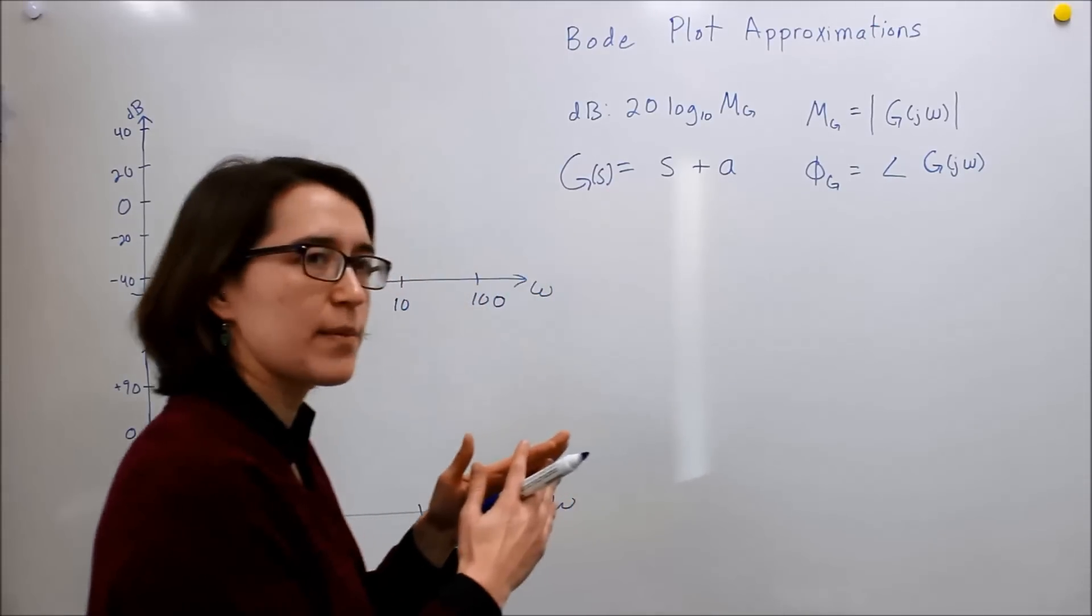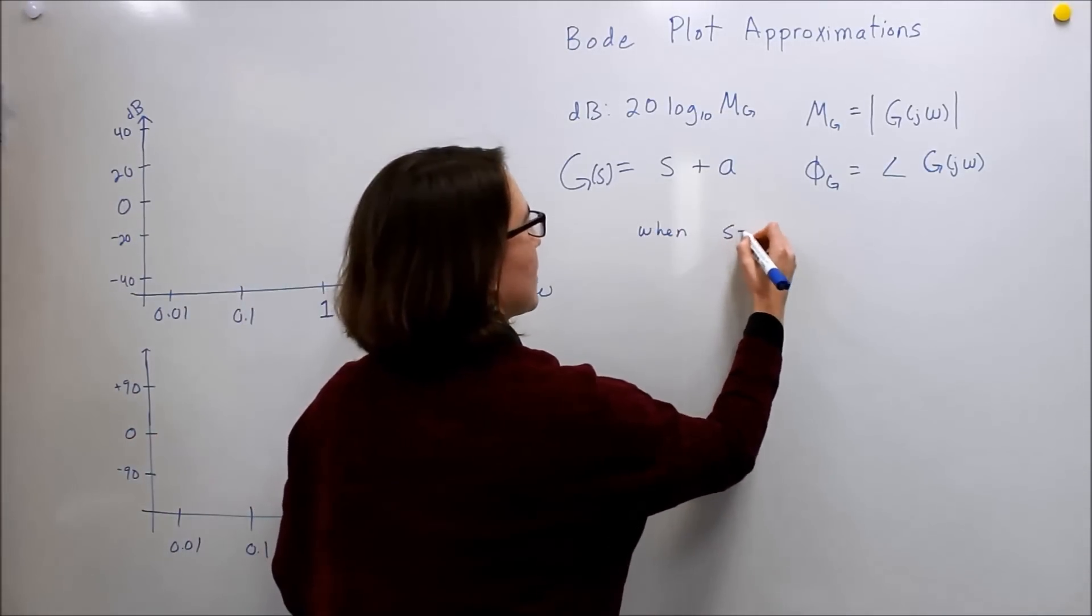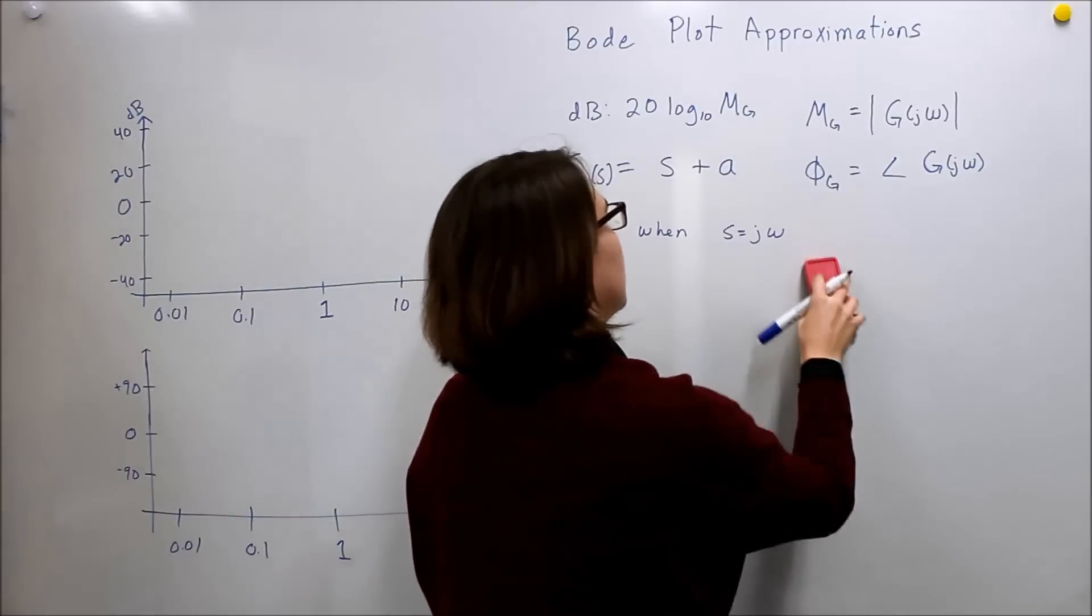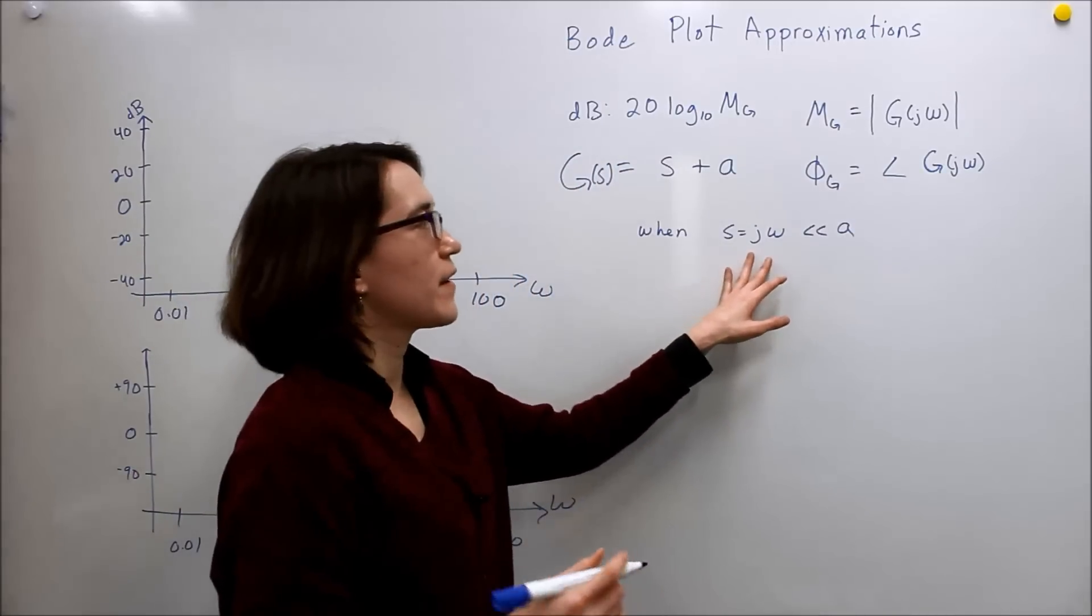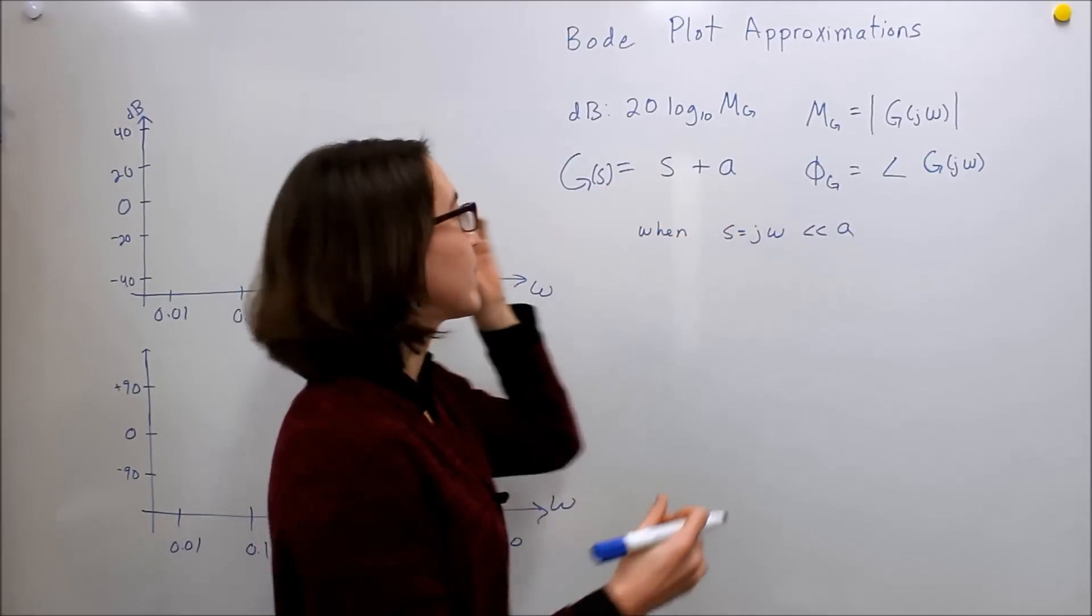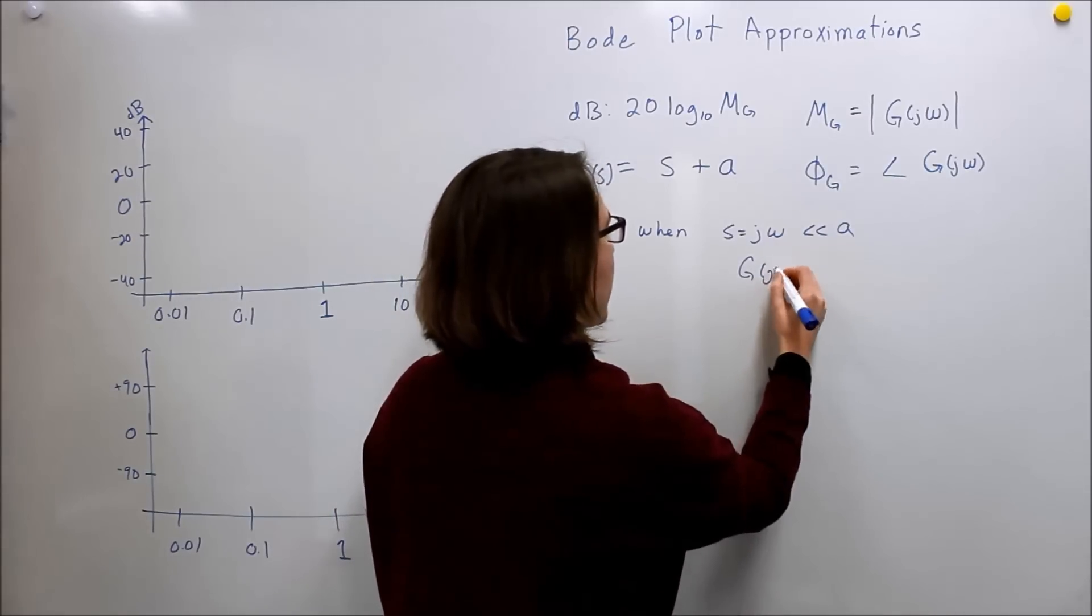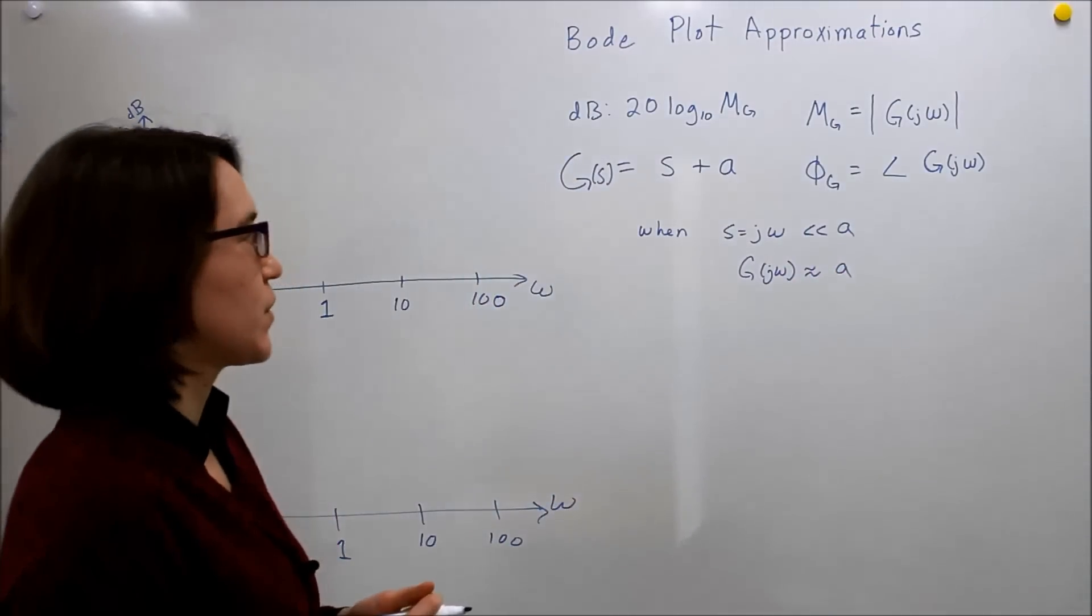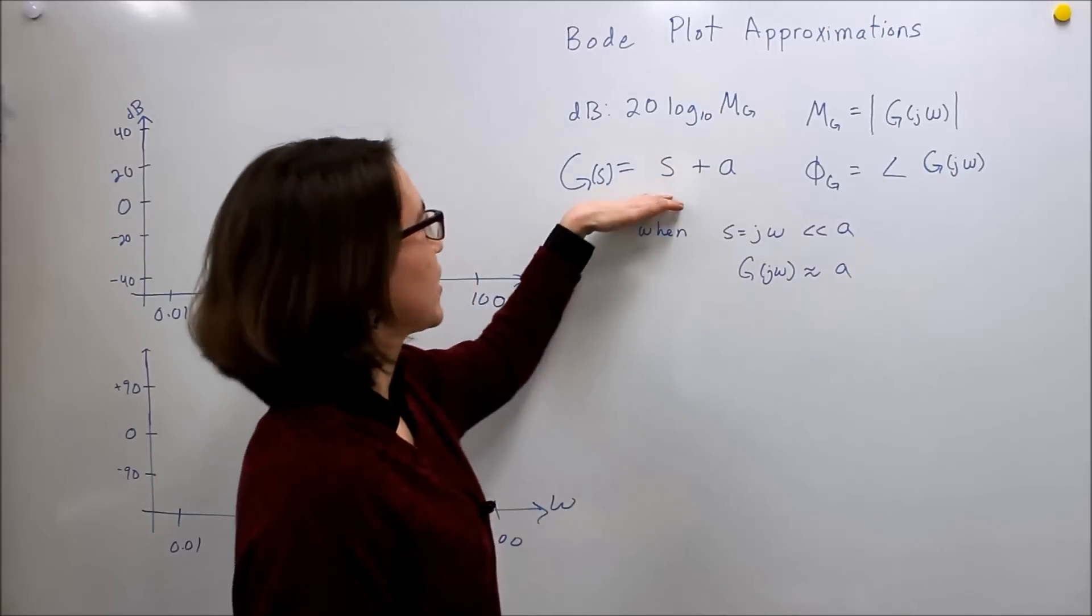So we're going to take two steps first. First, we're going to look at when s equals j omega is much less than a. So when we're at very low frequencies, they don't really affect this a. This is a very small value where a will dominate. So g of j omega is approximately just a. So at very low frequencies, we are going to assume that our frequency response, or our transfer function, just looks like a.